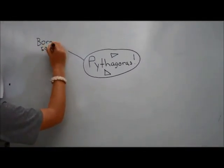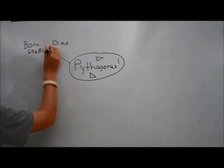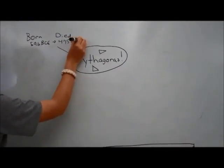Pythagoras by Jack F. Pythagoras was born around 560 BCE and lived until 475 BCE.